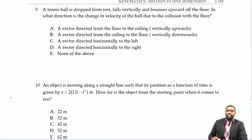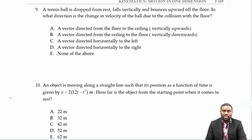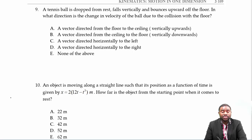A tennis ball is dropped from rest, falls vertically, and bounces upward off the floor. In what direction is the change in velocity of the ball due to the collision with the floor? Will it be vertically upward, vertically downward, horizontally left, horizontally right, or none of the above?